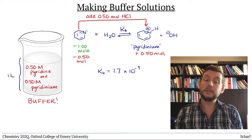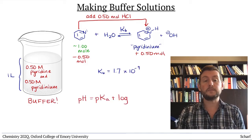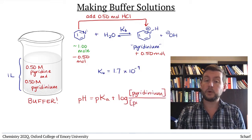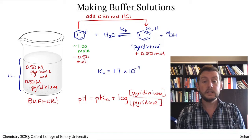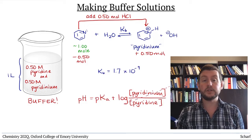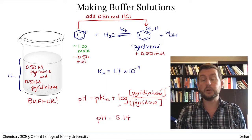We can determine the pH of this solution using the Henderson-Hasselbalch equation if we know the pKa of pyridinium, which is 5.14. Since both the conjugate base and conjugate acid are present in equal concentrations here, both 0.50 molar, pH equals 5.14.